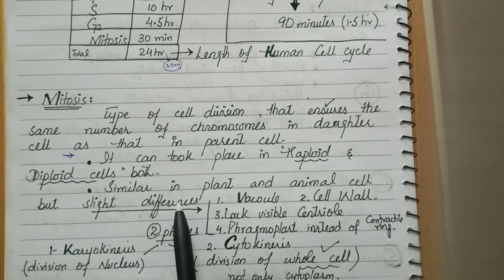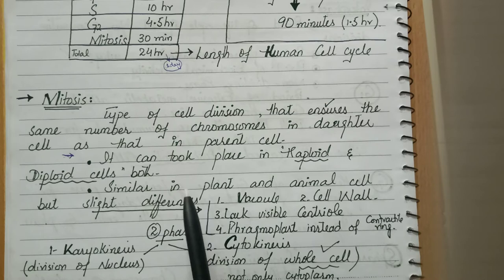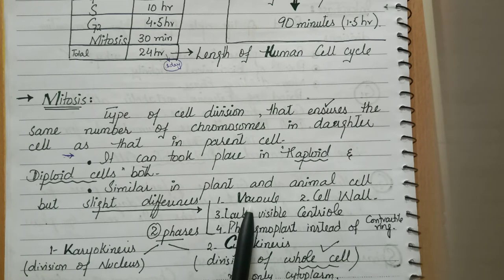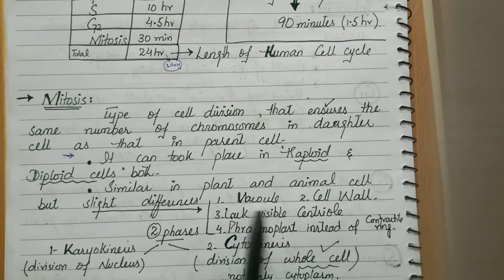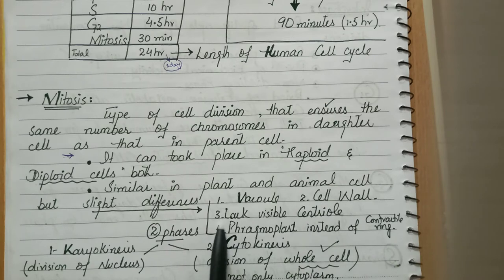Mitosis in plant and animal cells is similar but with a few differences. First, the central vacuole: it is present in plant cells but not in animal cells. Second, the cell wall: it is present only in plant cells, not in animal cells.